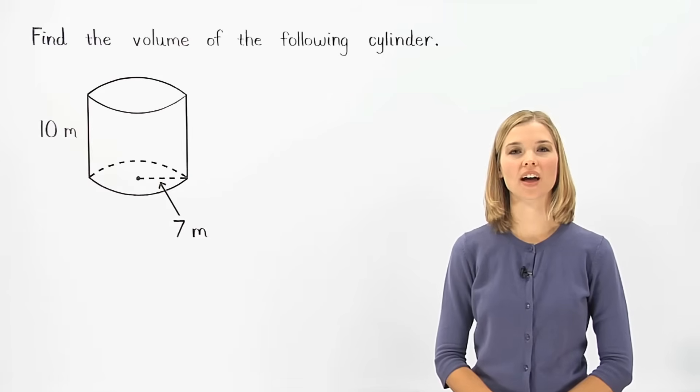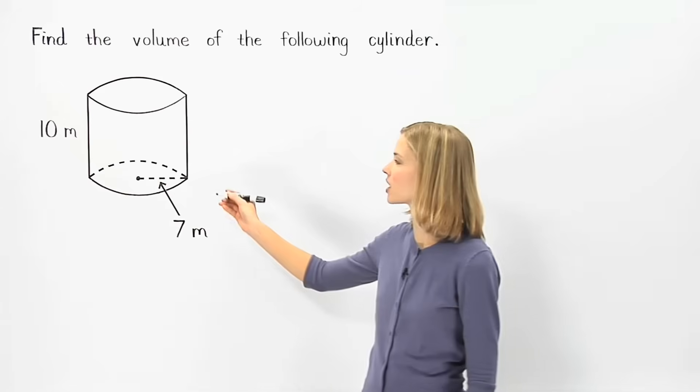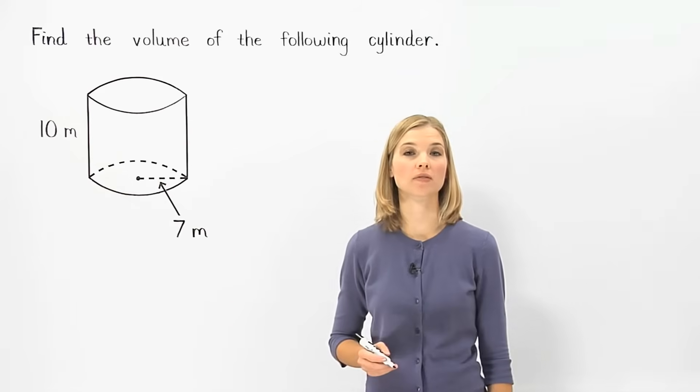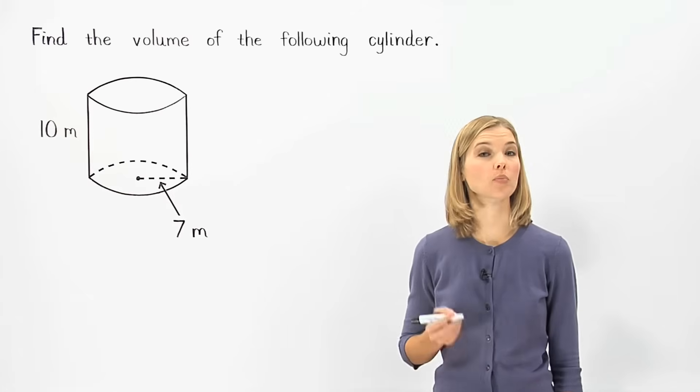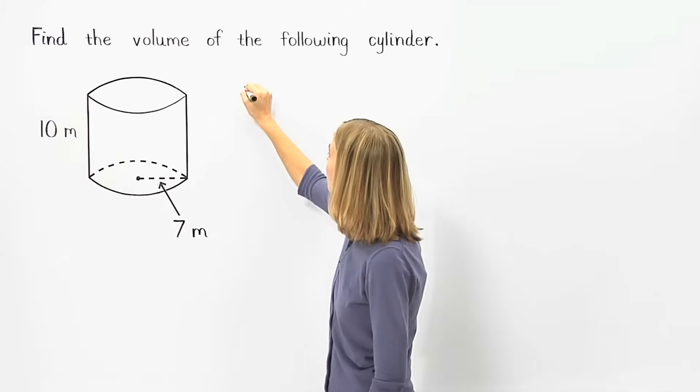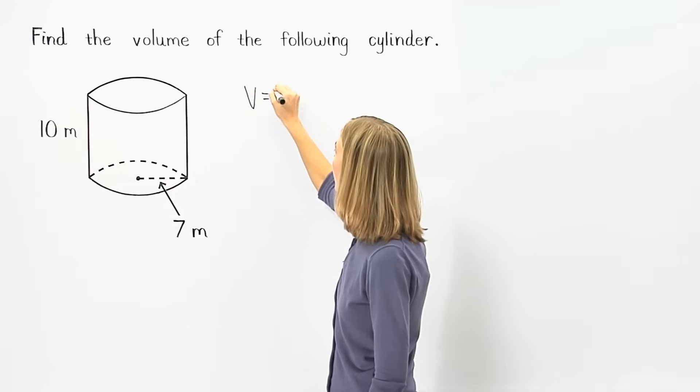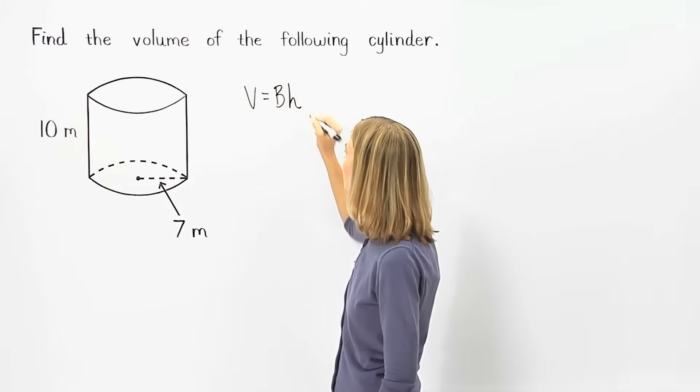In this example, we're asked to find the volume of the given cylinder. To find the volume of a cylinder, we use the same formula that we used to find the volume of a prism: volume equals area of the base times height.